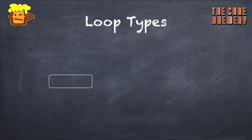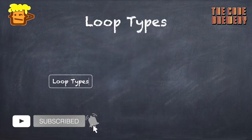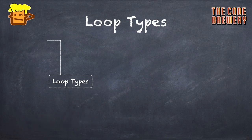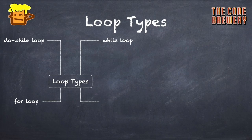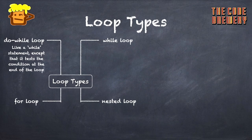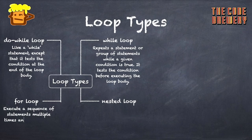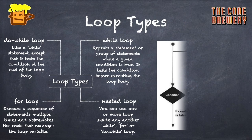When we come to types of loops, we'll see there are four types. The first one is the do-while loop, the second one is the while loop, the third one is the for loop, and the fourth type is the nested loop. You'll hear about nested loop in very few books, as most of them don't speak of it. We'll understand each loop one by one.